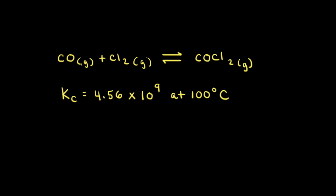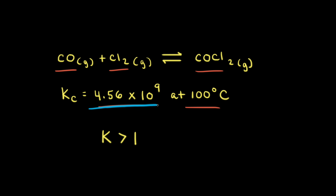Let's look at the reaction of carbon monoxide and chlorine gas to form phosgene. At 100 degrees Celsius, the equilibrium constant for this reaction is 4.56 times 10 to the ninth. Since K is greater than 1, we know there are more products than reactants at equilibrium. With an extremely large value for K like 10 to the ninth, we can assume this reaction essentially goes to completion.